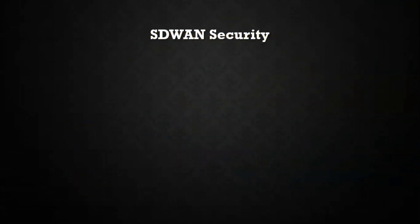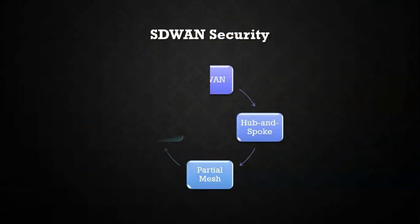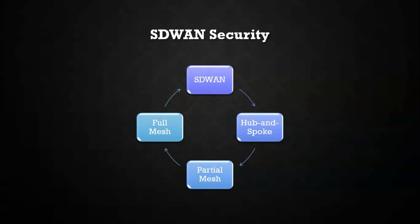For SD-WAN security topology, we have a couple of methods. In traditional networking you can use hub-and-spoke model, and the same applies here — additionally we have partial mesh and full mesh modes. Hub-and-spoke is a network topology commonly used in enterprises, where the hub is placed in a centralized data center or headquarters and is directly connected to multiple spokes in branch offices or other locations.